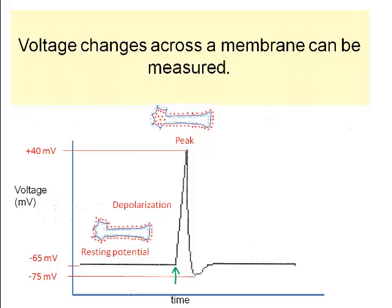The influx of positive ions changes the membrane voltage from minus 65 millivolts, negative on the inside, to plus 40 millivolts, positive on the inside, at its peak.